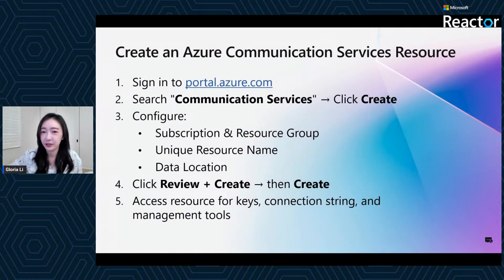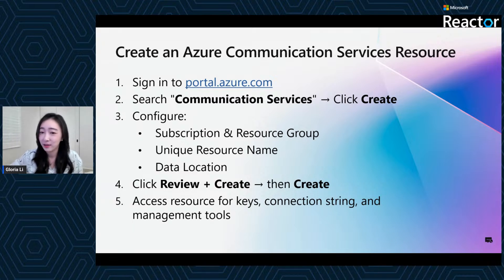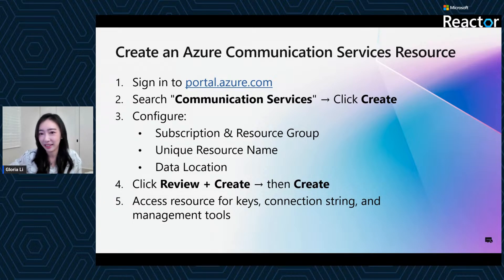The first thing we want to do is create an ACS resource. It allows you to build communication features like voice, messaging, email, and more into your own application, all backed by the same global infrastructure as Microsoft Teams. To create such a resource, we will go through a few straightforward steps on the Azure portal. I will guide you through the process step by step.